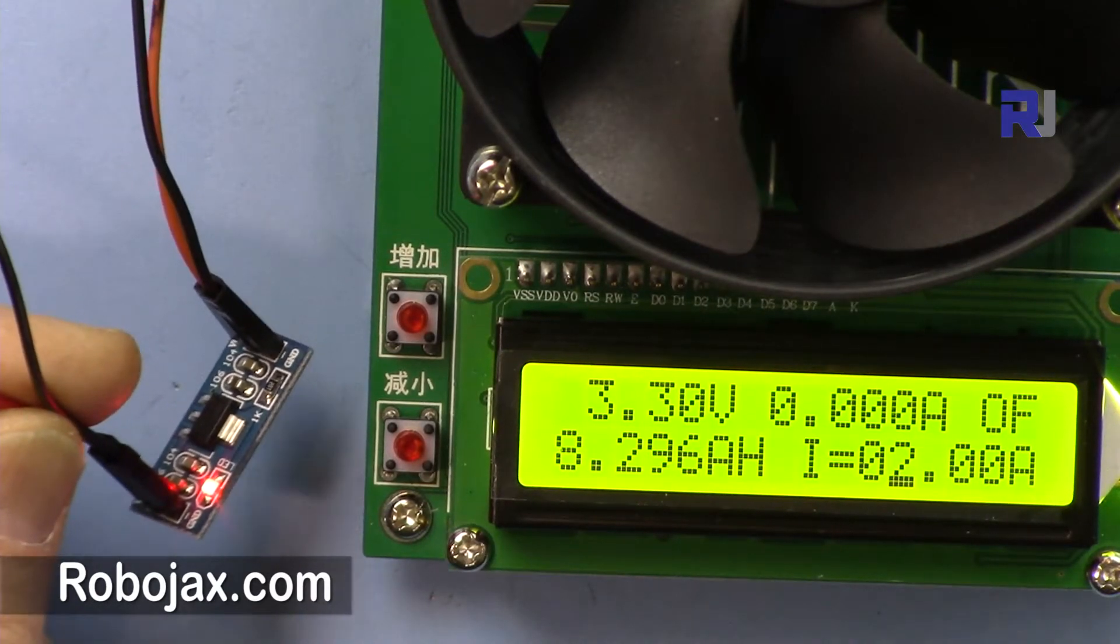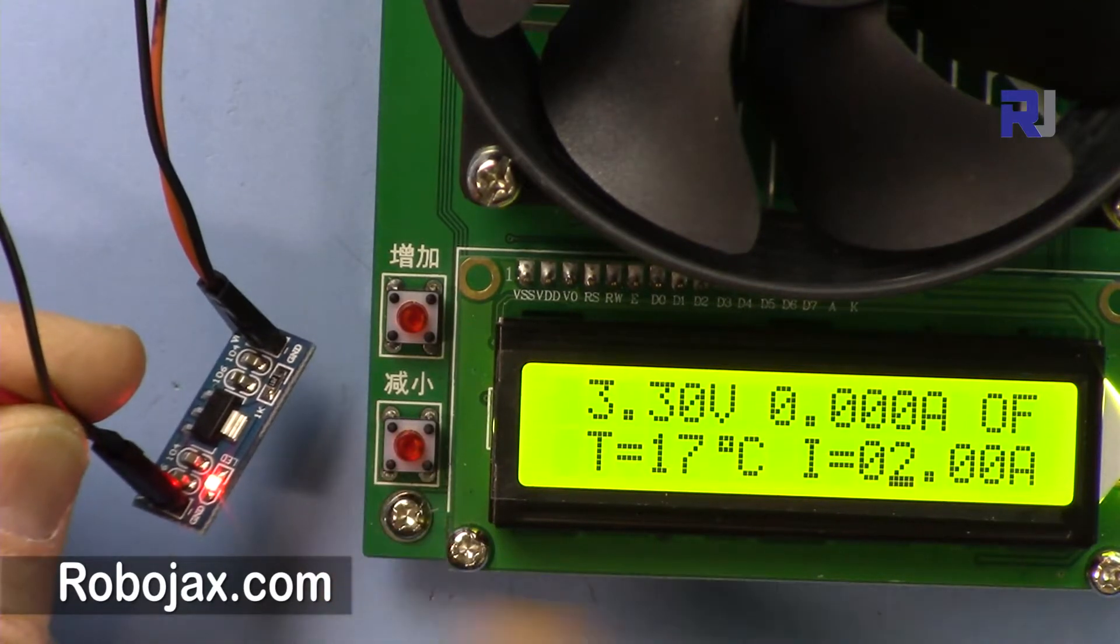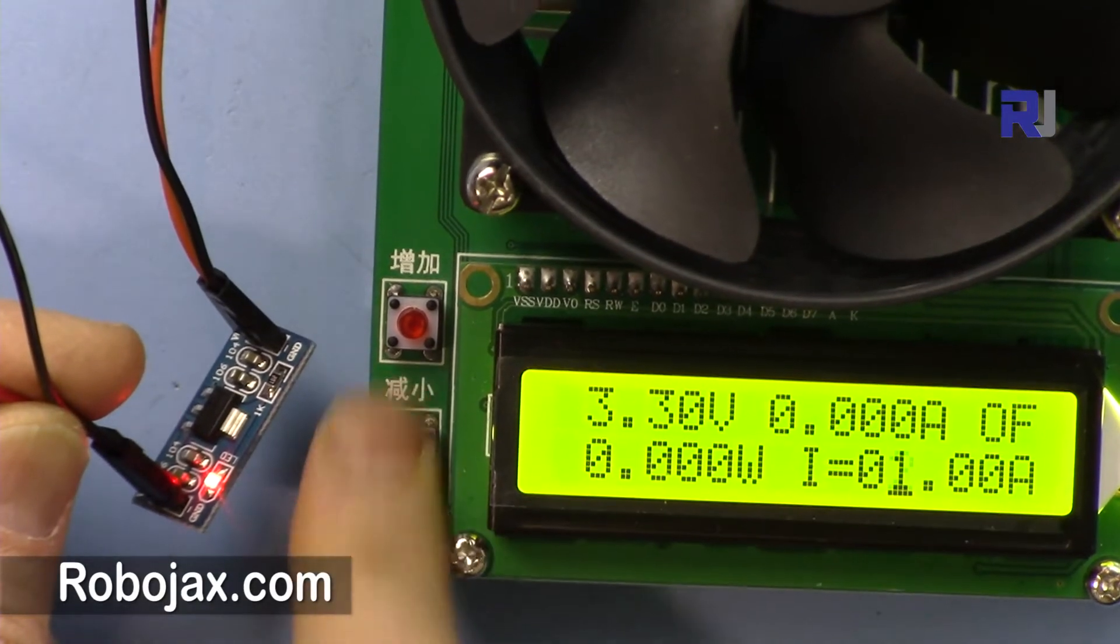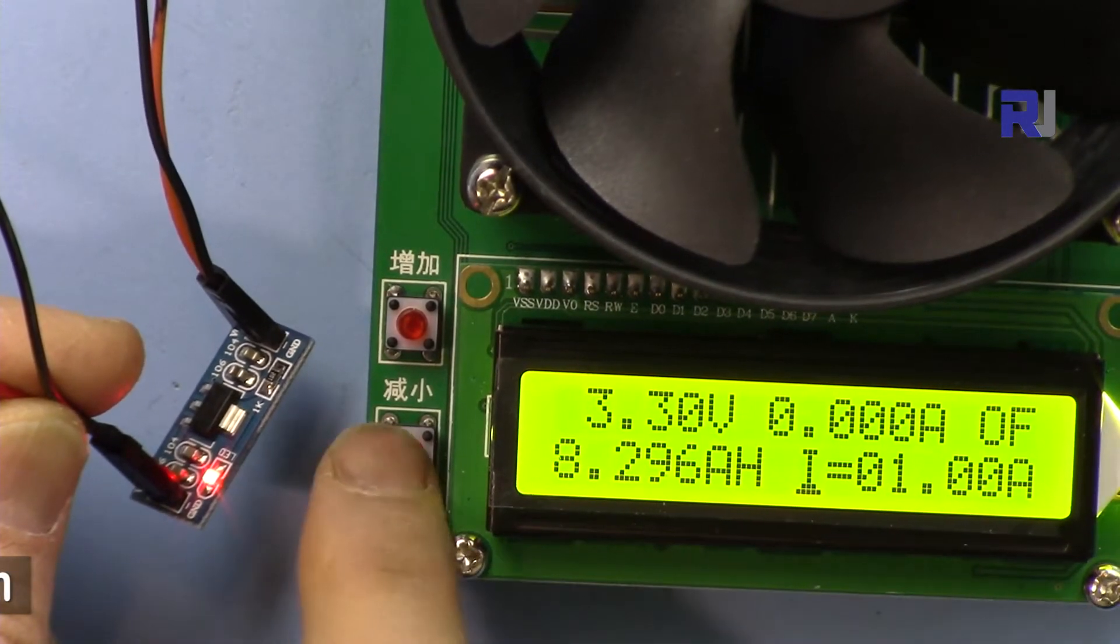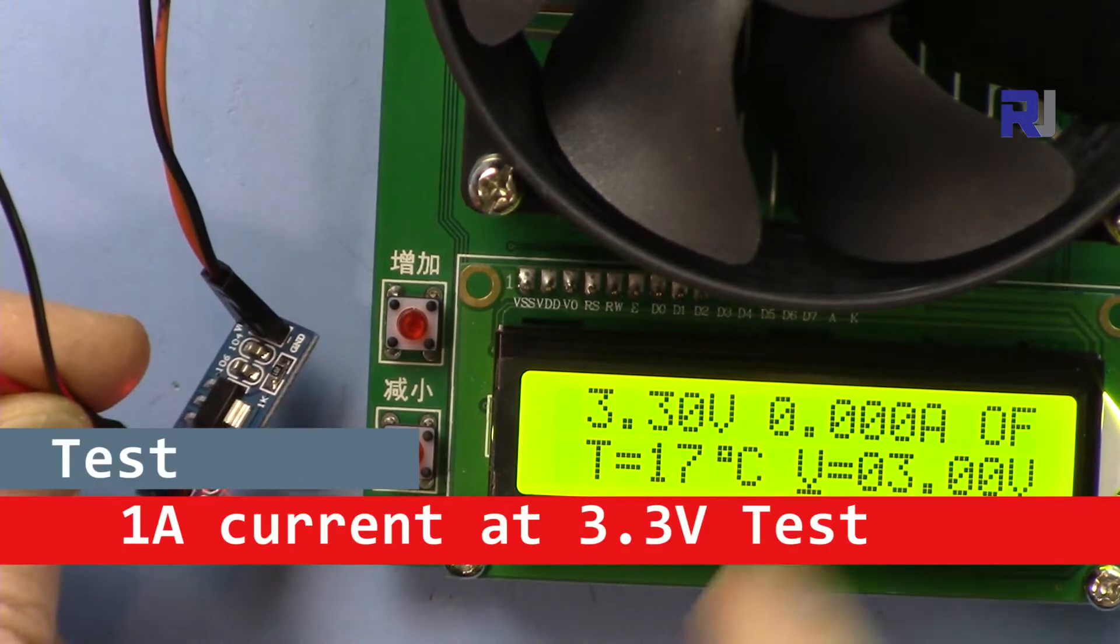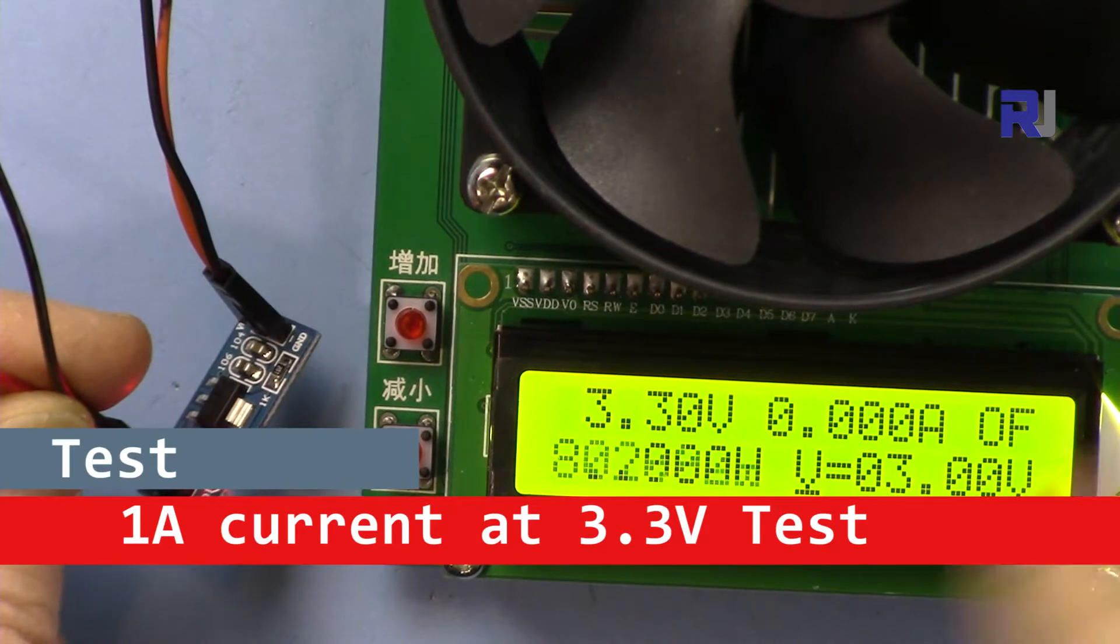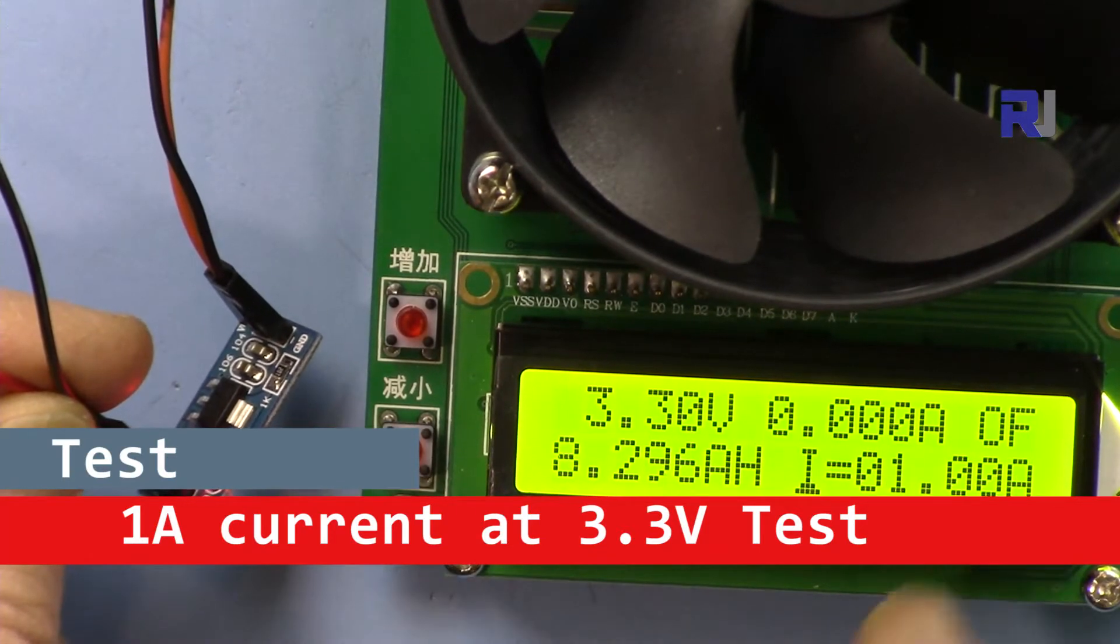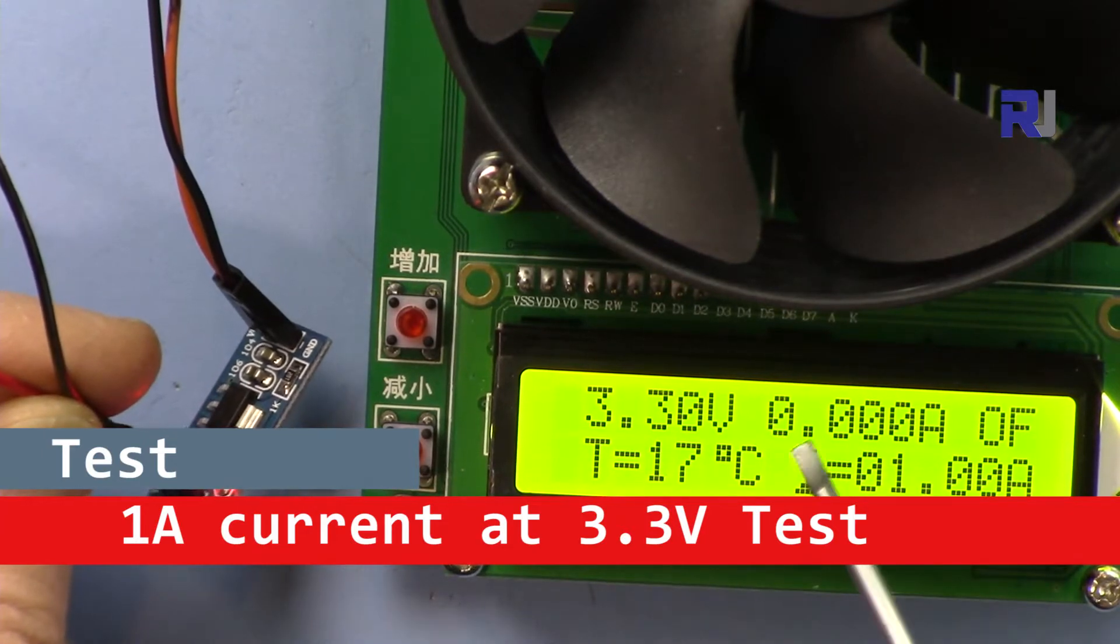So let me set this to 1 amp and then the voltage to 3 volts. That's good. So I'm going to connect it and we will see the current that is drawn will be here.